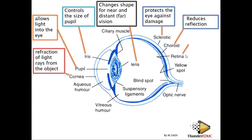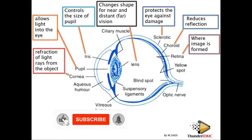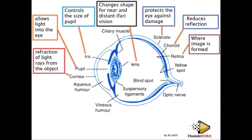The retina is where the image is formed. The retina contains sensory cells that can detect light under dim and bright conditions — these are called cones and rods. Cones are important for seeing colour and are used mainly during bright light or daytime. Rods cannot detect colour but are used more at night. Nocturnal animals like lions have more developed rods because they need to see at night. Rods can sense even very small amounts of light.